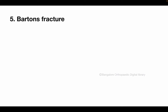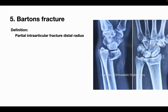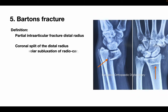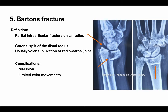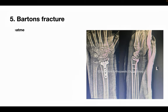Next is Barton's fracture. It is the partial intra-articular fracture of the distal radius, where the displaced distal fragment carries the wrist joint, carpal bones and the hand with it. Here you can see the coronal split of the distal radius and the displacement. Complications include malunion, limited wrist range of movements and osteoarthritis of the wrist. Standard treatment of Barton's fracture is open reduction internal fixation with a buttress plate.